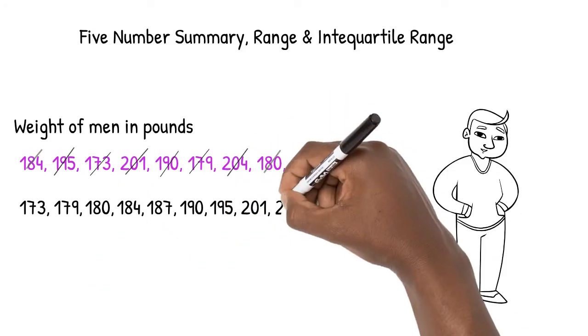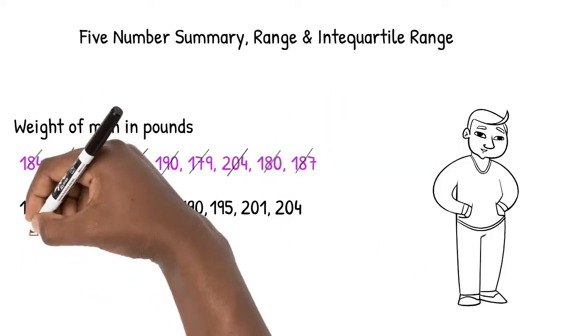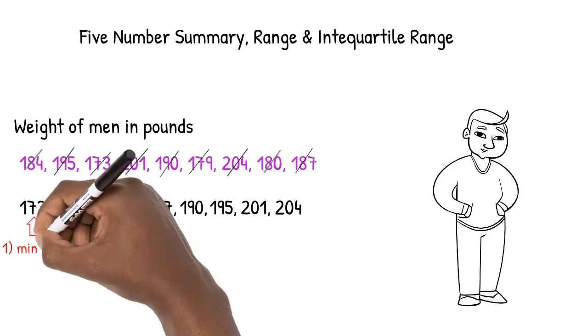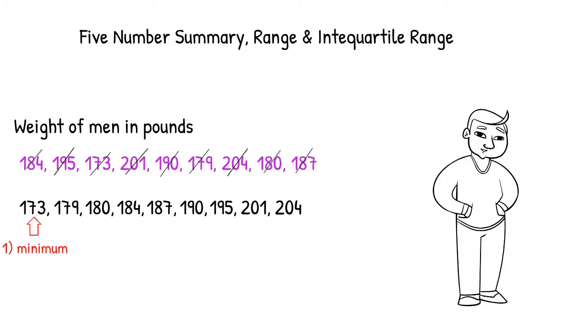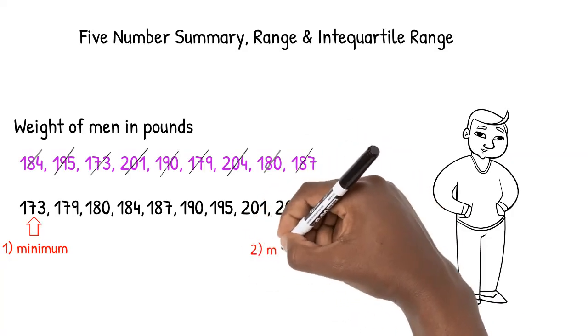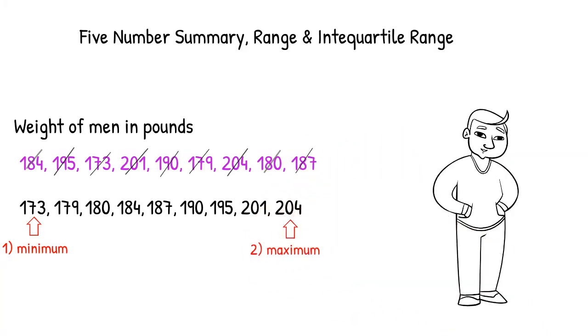Once organized, it's easy to see that the minimum weight is 173 pounds and the maximum weight is 204 pounds. These are the first two numbers in the five-number summary.